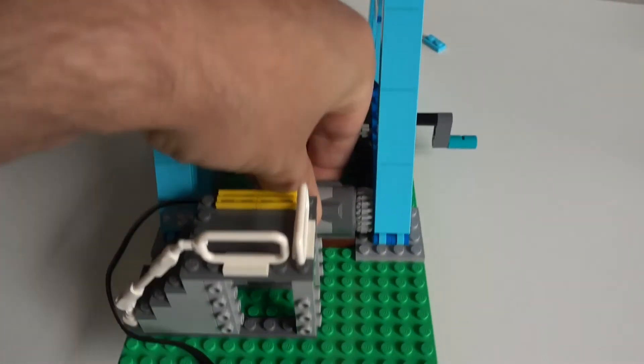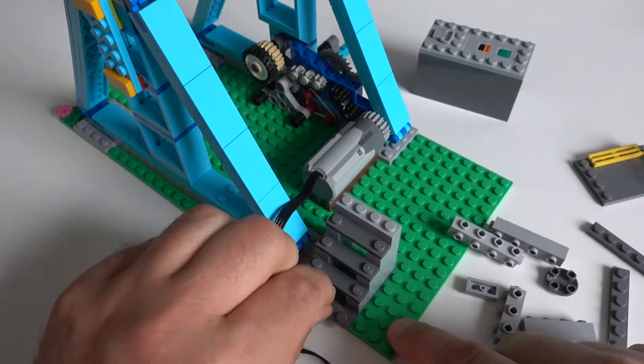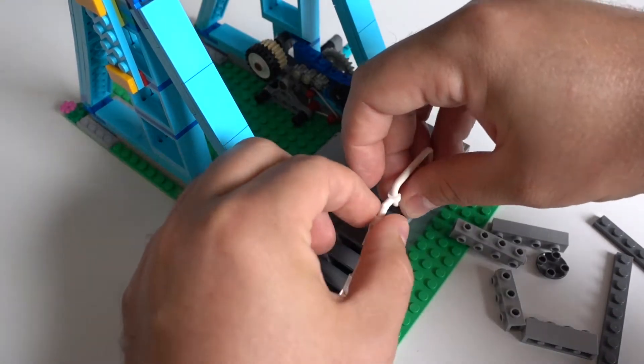Then we're gonna put the battery box under the stairs. A few extra pieces are also needed for this. I will list the needed pieces in the end of the video.